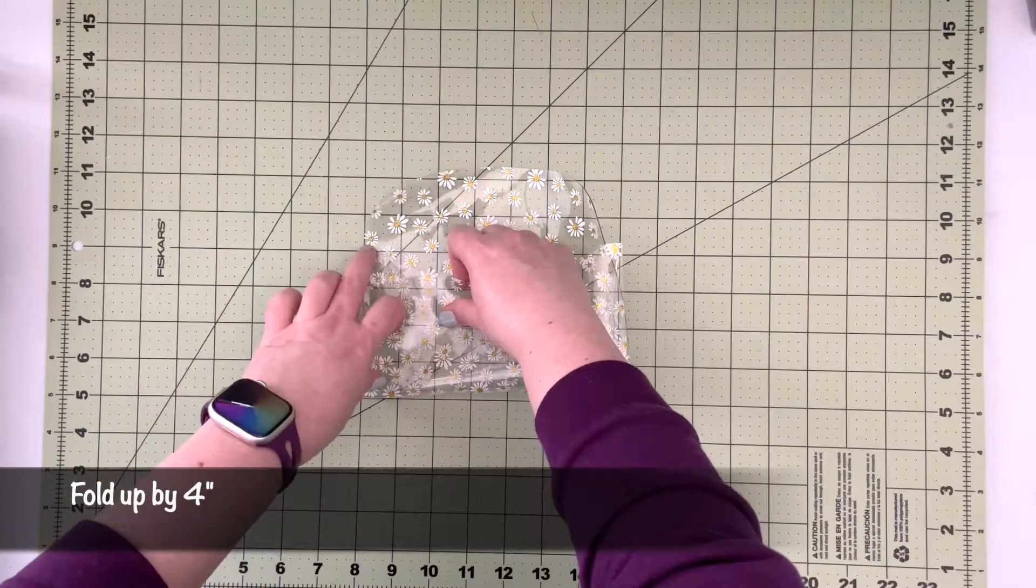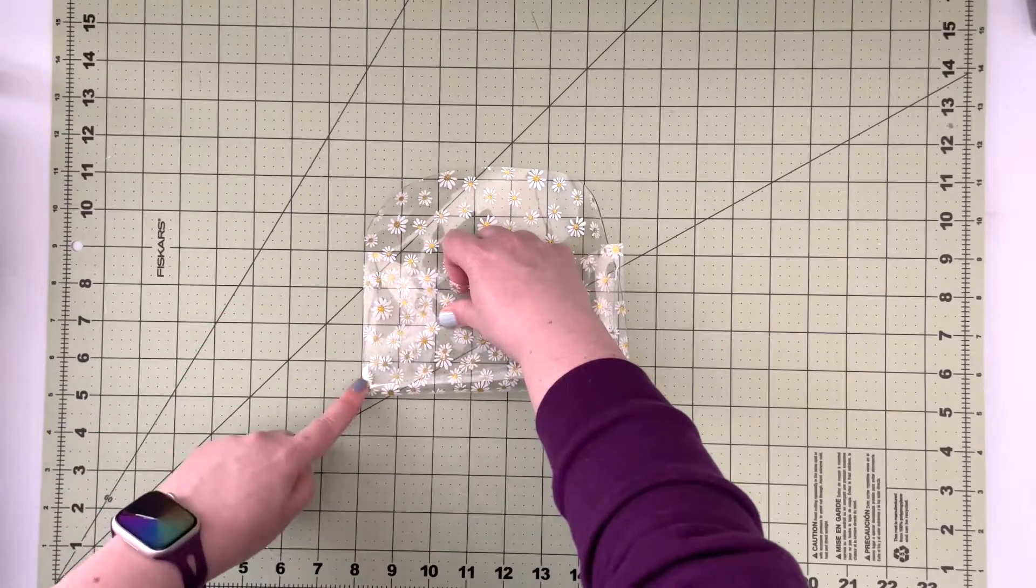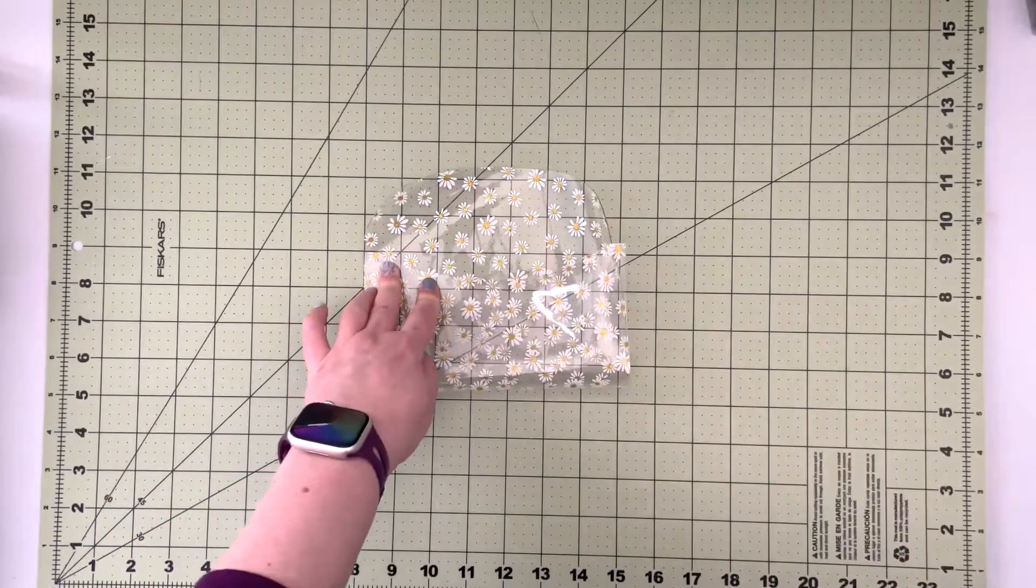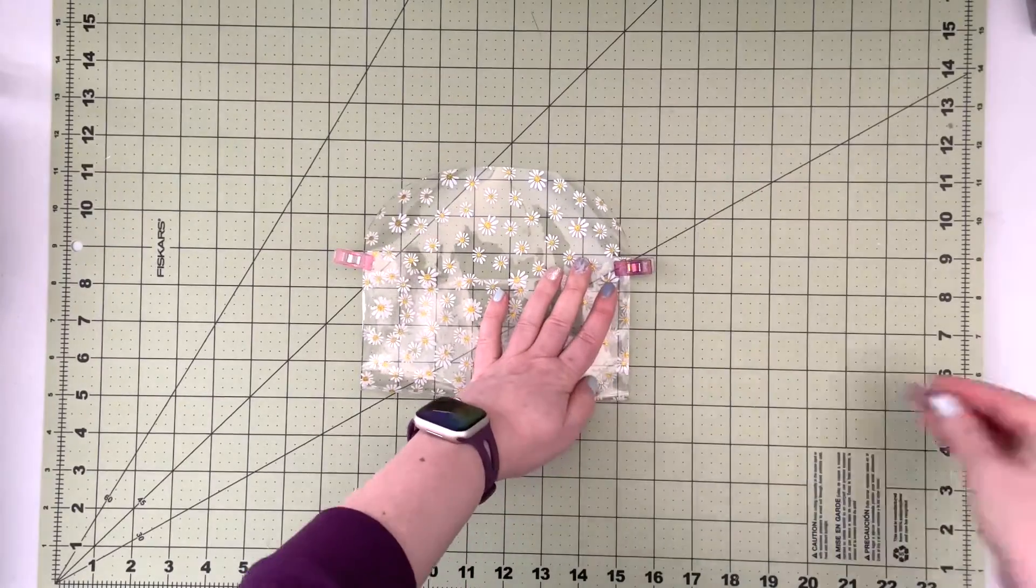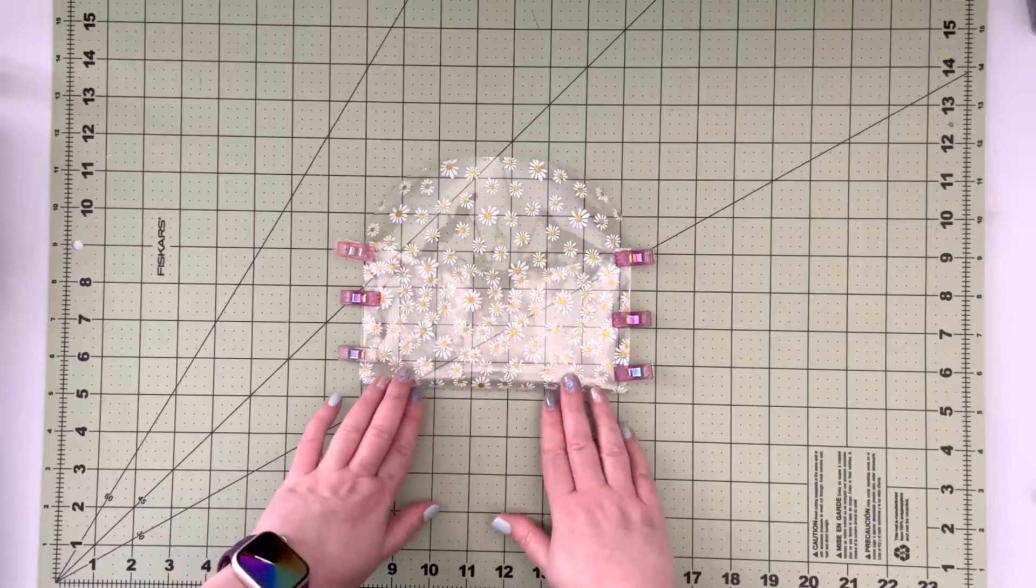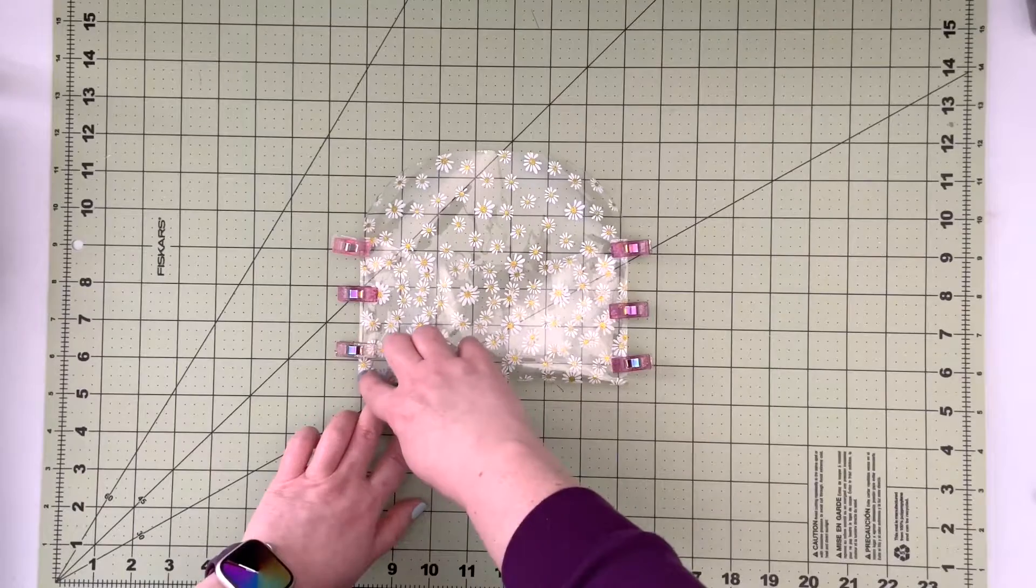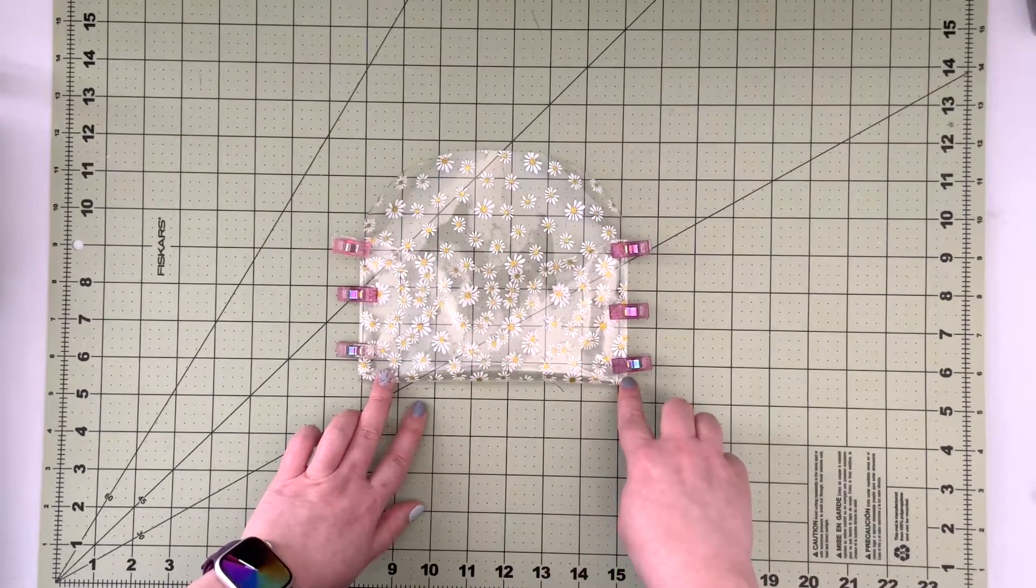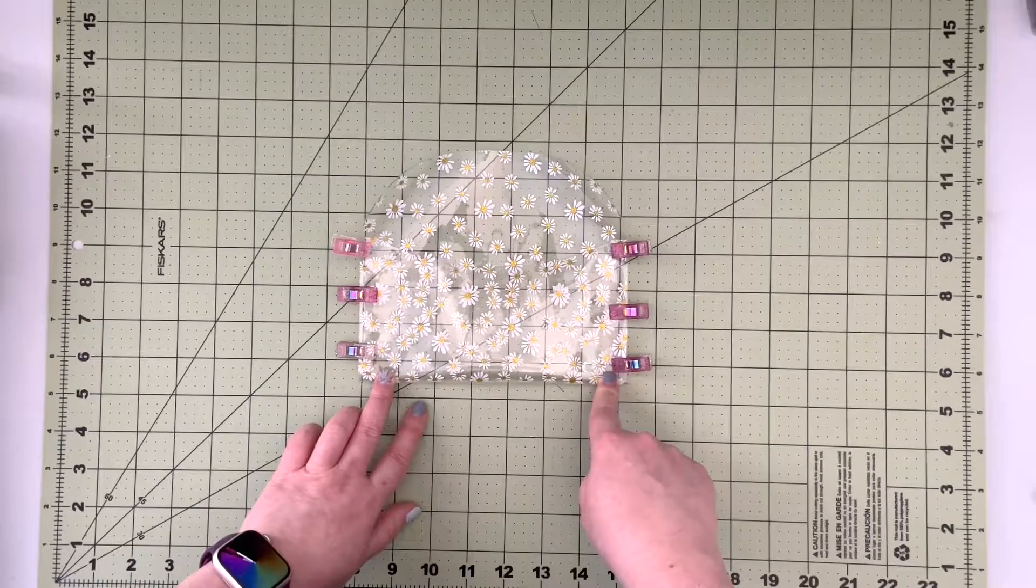So you want to refer to your cutting mat and bring the end of the short edge up to the four inch mark. So mine is right here, I'm gonna clip it. And when you have that prepped you're gonna take it to the machine and you're gonna top stitch along this whole edge with one eighth of an inch seam allowance and 3.5 stitch length.